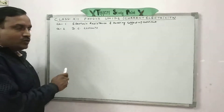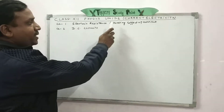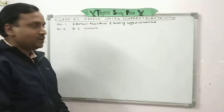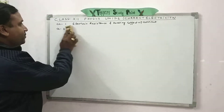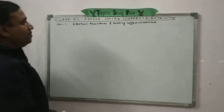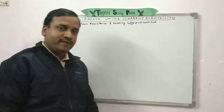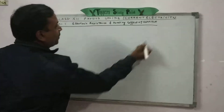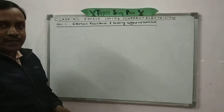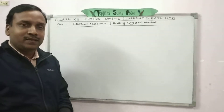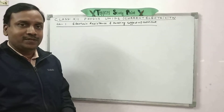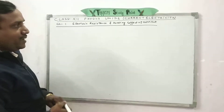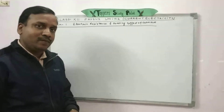In this unit there are two chapters: chapter 1 is electric resistance and heating effect of current, and chapter 2 is DC circuit. We will first discuss the formulas of chapter 1. These formulas are simple — we can learn them more easily if we understand the concepts. The goal is to be able to use these formulas in numericals easily.